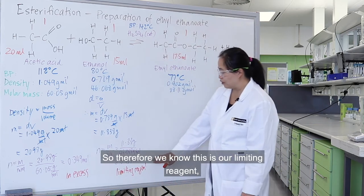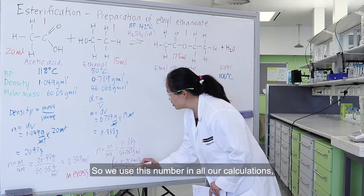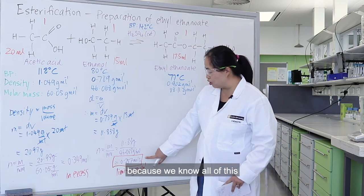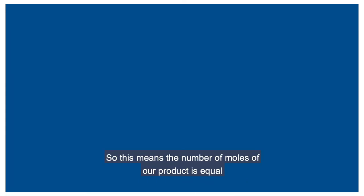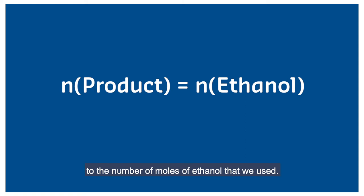Therefore, we know this is our limiting reagent, so we use this number in all our calculations because we know all of this will be used up in our reaction. This means the number of moles of our product equals the number of moles of ethanol that we used.